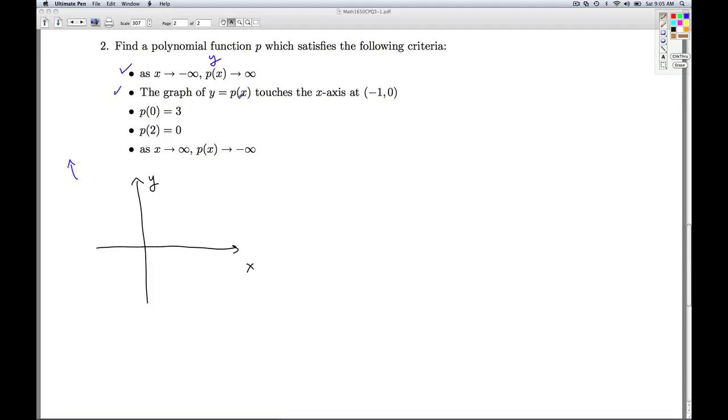The graph of y equals P of x touches the x-axis at the point negative 1, 0. So here's the x-intercept here, negative 1, 0. And we're told that the graph touches there. So I can imagine it just comes down, touches, and rebounds.